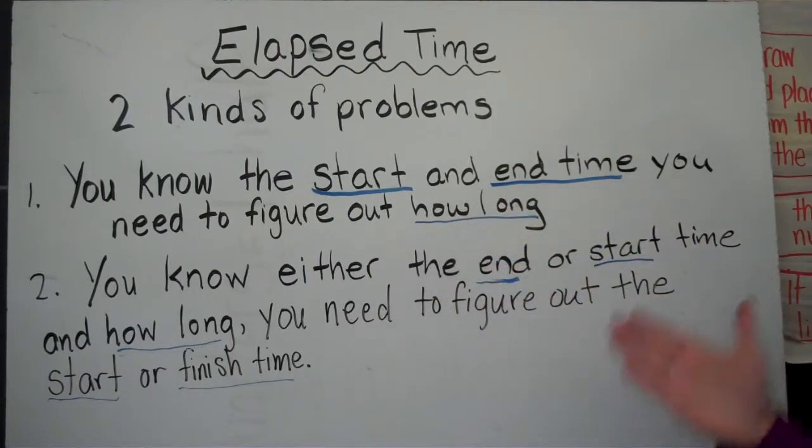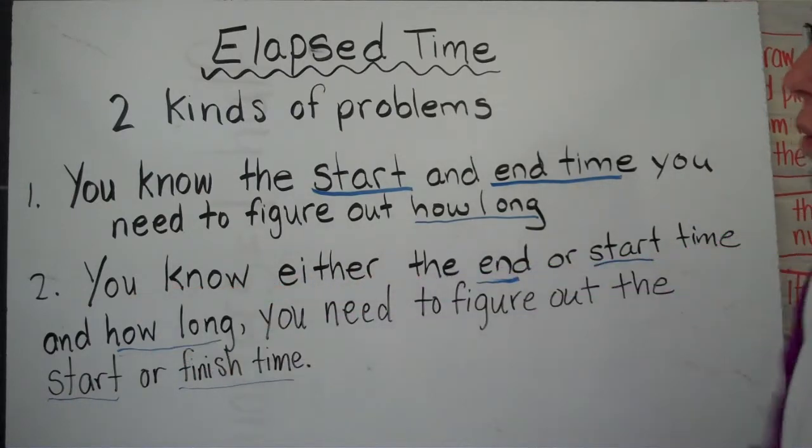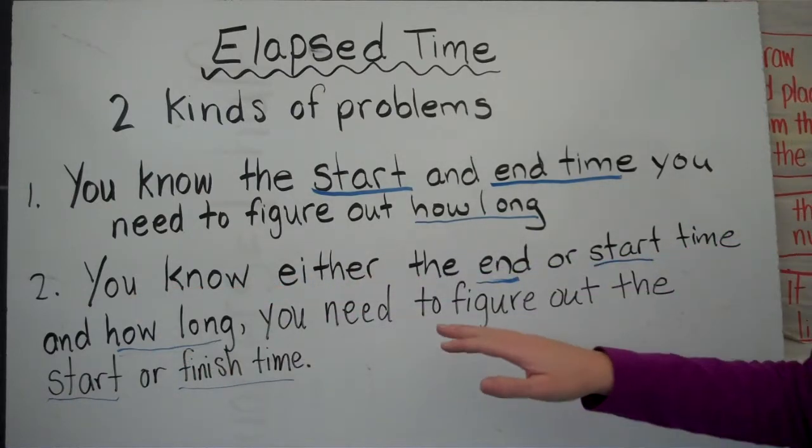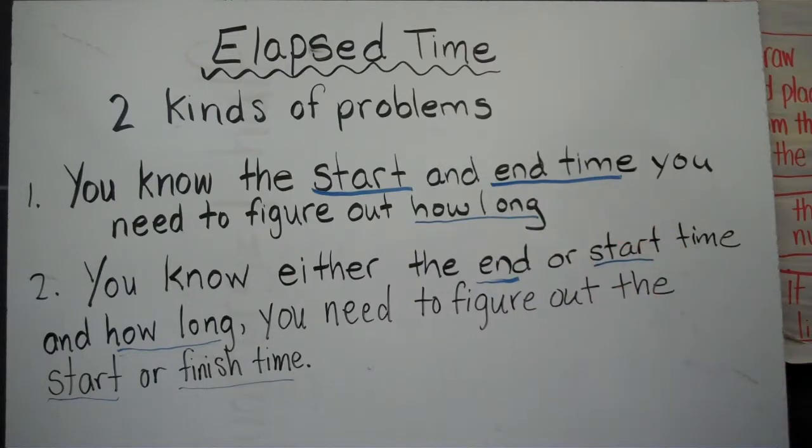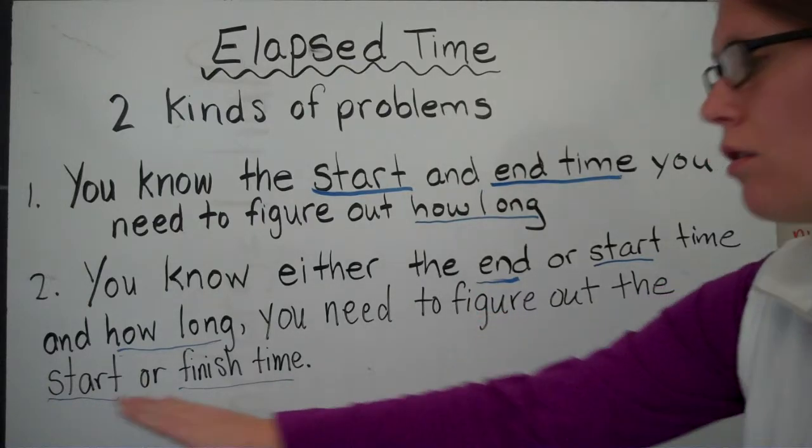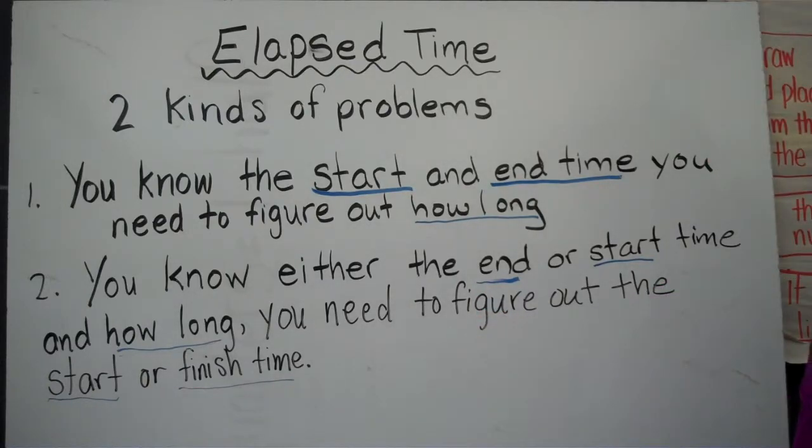The next kind of problem is when you either know the end or the start time and you know how long it's going to be. So you're going to the movie, it starts at 5:30. The movie's going to be 2 hours and 25 minutes. You have to figure out either the start or the finish time. In this case you would want to find the finish time of the movie. Today we're going to use a number line to help us when figuring out our answers. There's several strategies but today we're going to use our number line.